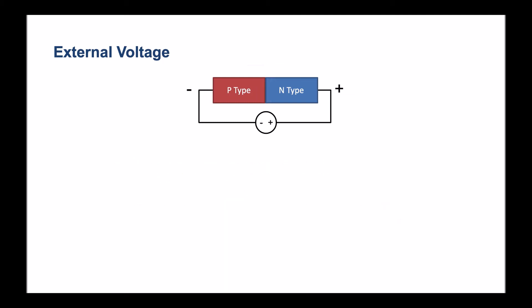On the other hand, we can connect our p-n junction in reverse bias. So here, the negative end of the power supply is connected to the p-type material and the positive to the n-type material.